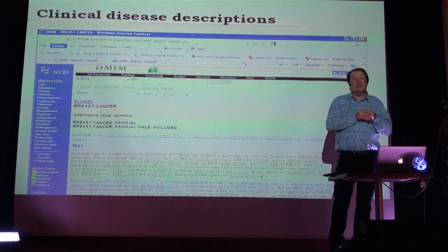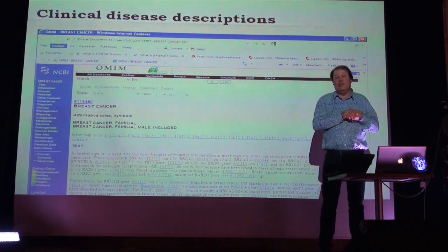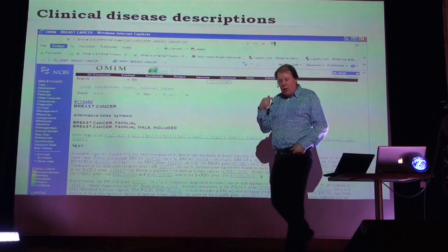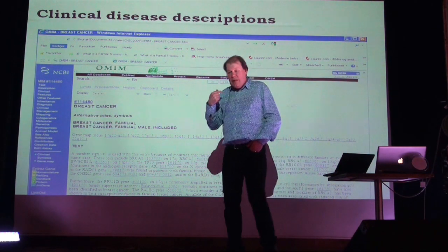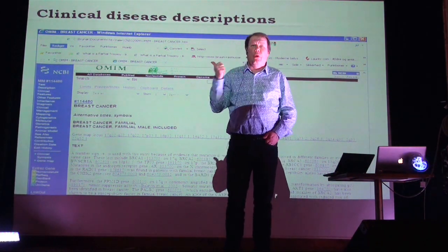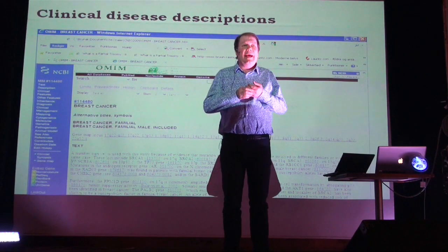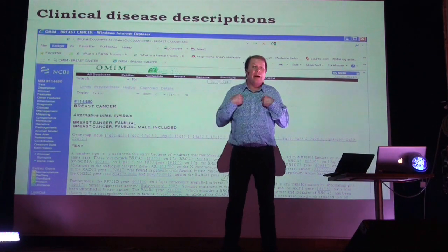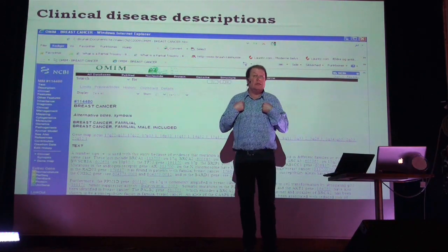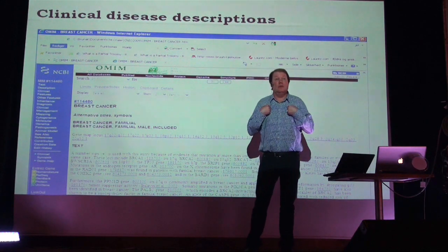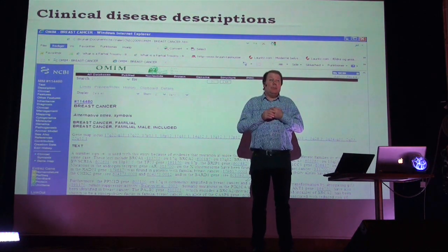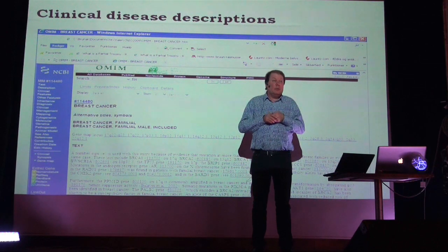One of the discoveries from the Human Genome Project was that our organism is extremely gene-poor. We have around 25,000 protein-coding genes in our genome. This was a big disappointment for mankind, I would say.